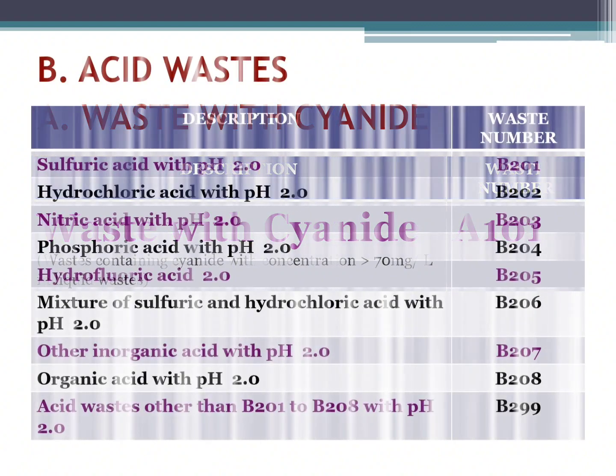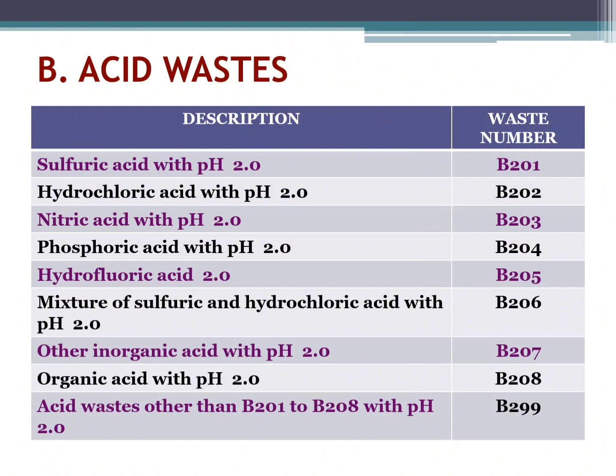The second is acid waste. Sulfuric acid with pH 2.0, waste number B201. Hydrofluoric acid with pH 2.0, waste number B202. Nitric acid with pH 2.0, waste number B203. Phosphoric acid with pH 2.0, waste number B204. Hydrochloric acid with pH 2.0, waste number B205. Mixture of sulfuric and hydrofluoric acid with pH 2.0, waste number B206.